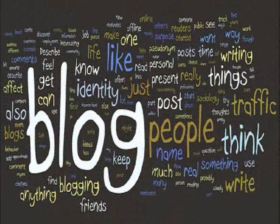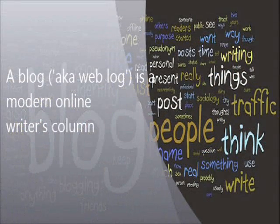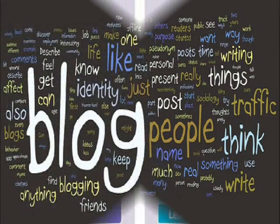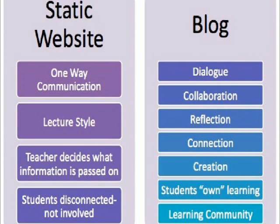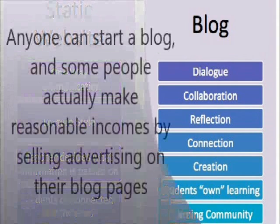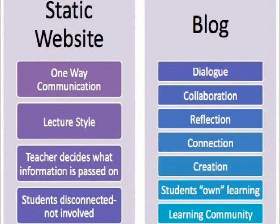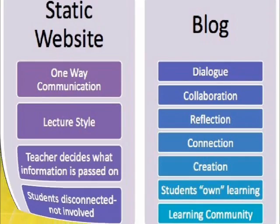A blog, also known as a web blog, is a modern online writer's column. Amateur and professional writers publish their blogs on most every kind of topic: their hobby interests in paintball and tennis, their opinions on health care, their commentaries on celebrity gossip, photo blogs of favorite pictures, and tech tips on using Microsoft Office. Absolutely anyone can start a blog, and some people actually make reasonable incomes by selling advertising on their blog pages. Web blogs are usually arranged chronologically and with less formality than a full website. Blogs vary in quality from very amateurish to very professional. It costs nothing to start your own personal blog.